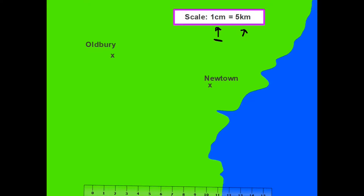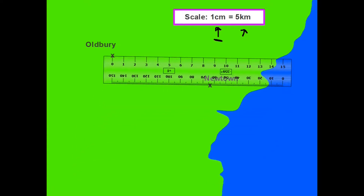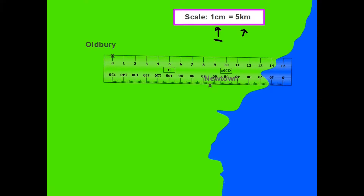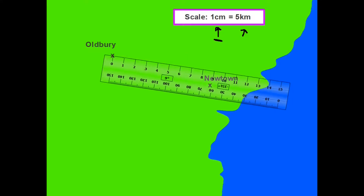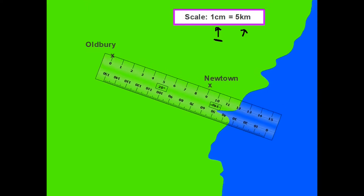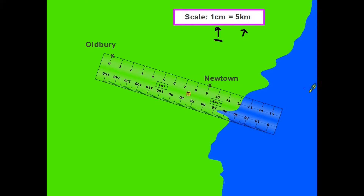Let's have a look at this example. I'm going to fetch a ruler and use it to simply measure the distance. We take this ruler, put the zero at Oldbury, and position it so we can see exactly how far away Newtown is. In this example, we are looking at a distance of nine centimeters.